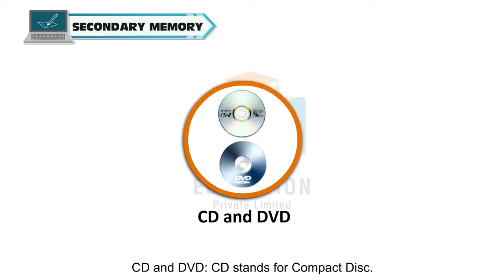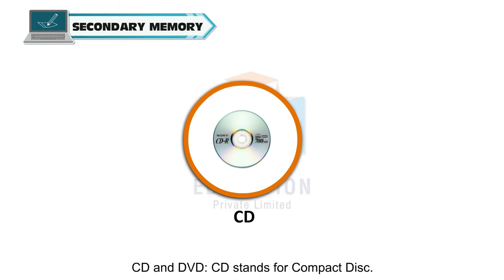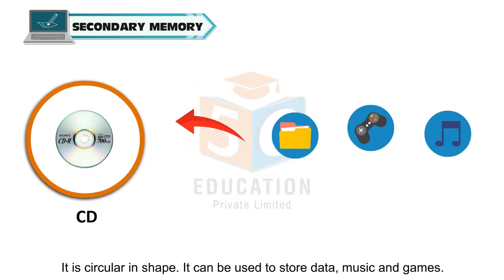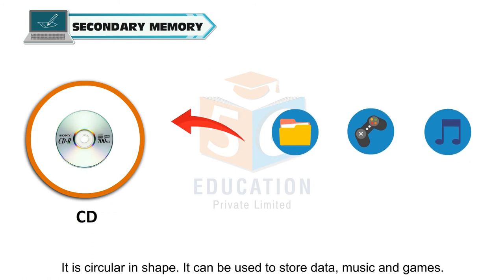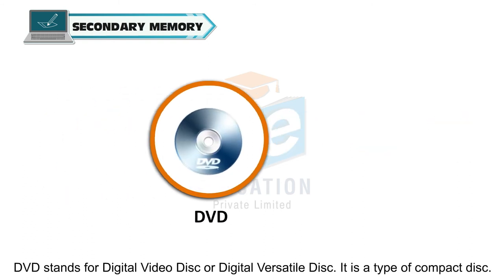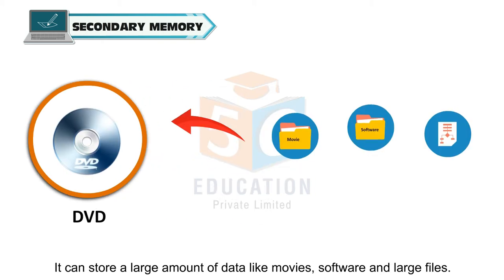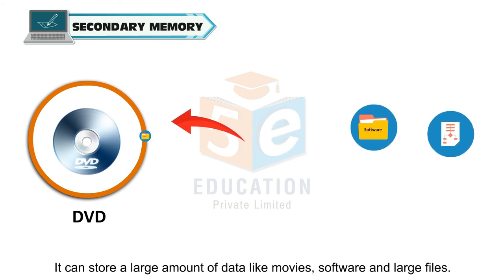CD stands for compact disk. It is circular in shape and can be used to store data, music and games. DVD stands for digital video disk or digital versatile disk. It is a type of compact disk that can store a large amount of data, like movies, software and large files.